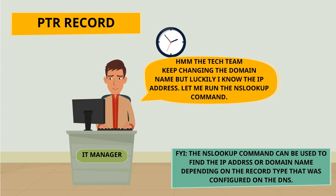A PTR record is the other way around — it's a reverse lookup. In other words, it would take an IP address and find the hostname instead.